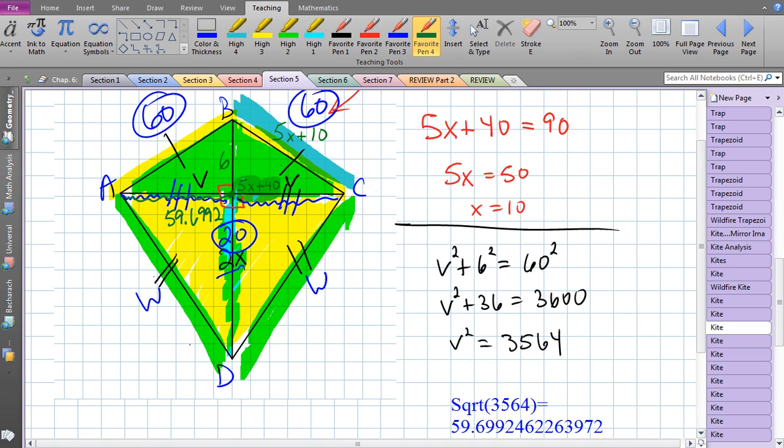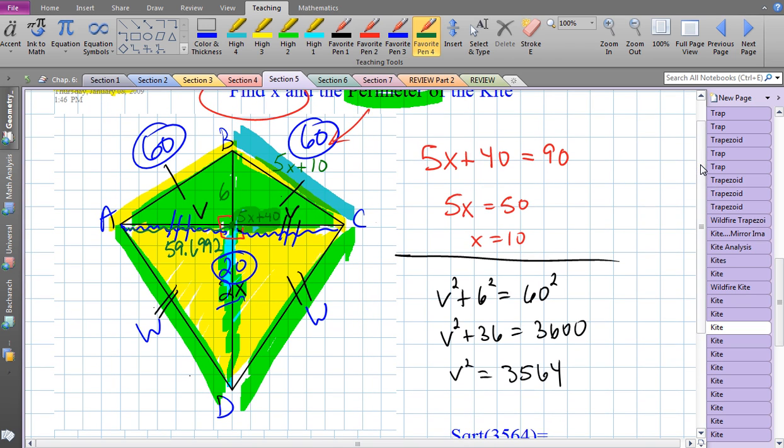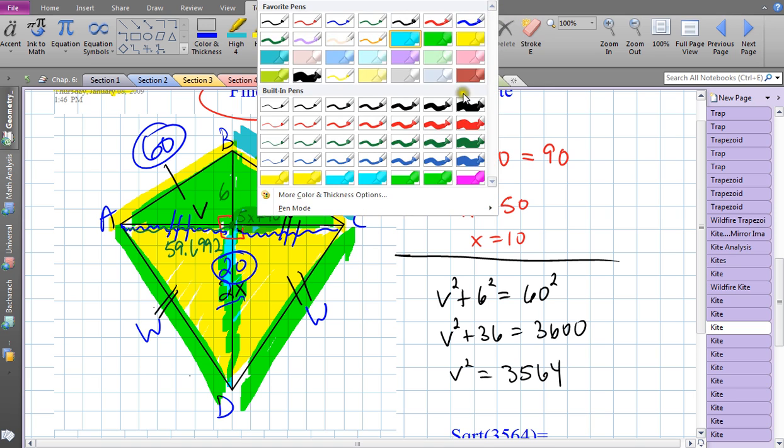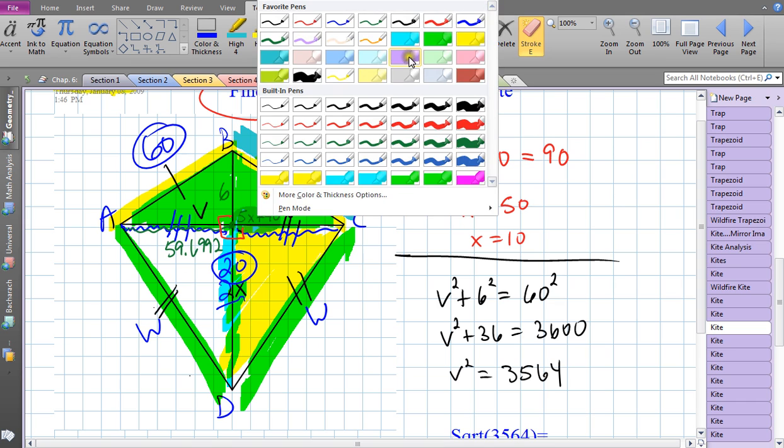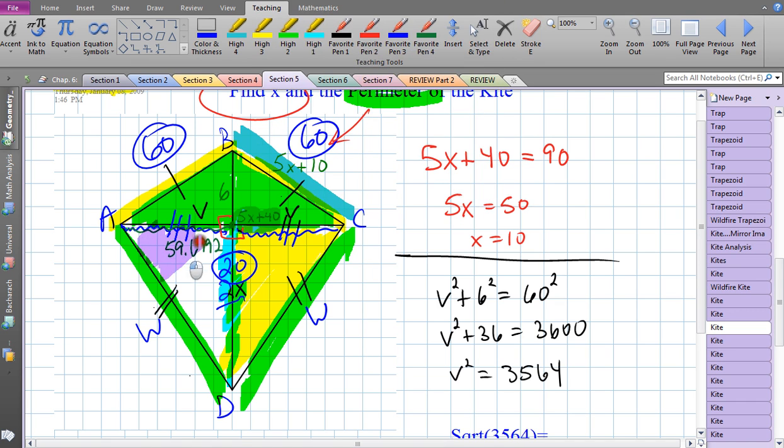My tablet tells me it's 59.6630494... so I'm going to write 59.6992 - that represents v right there. So what are we going to do? Now we're going to use one of the triangles on the bottom here, this triangle right here. Let's try to use a different color - this purple triangle right there.